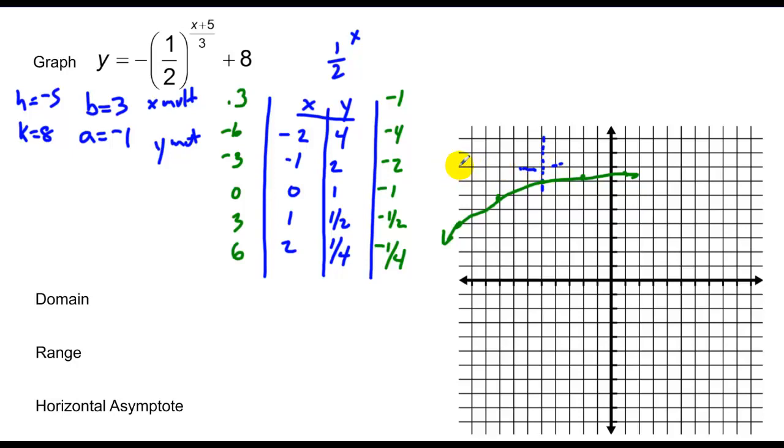So in this case, the domain appears to be going both ways once again, so this is all reals. The range, however, in this case appears to go down forever, and only goes up as high as this value here, which is 8. So horizontal asymptote is y equals 8, and y is less than 8.